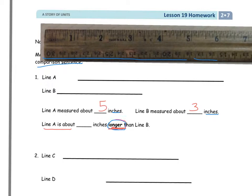When I hear 'about blank inches longer than,' I'm comparing the two. What's the difference between A and B? It's about 2 inches. Let's take a look down at problem 3.